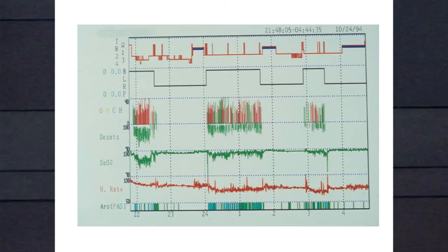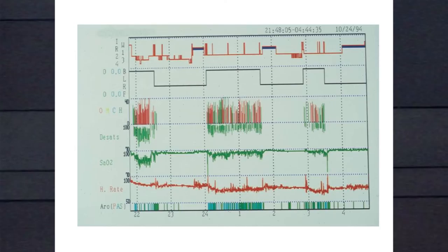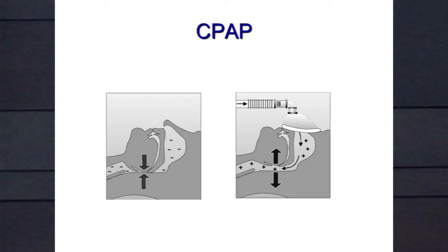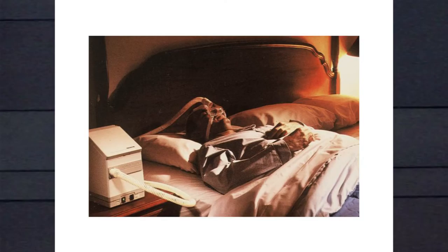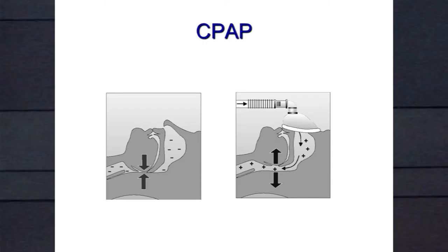How do we treat it? Weight loss. Avoid alcohol and hypnotics because they relax the back of the throat and predispose to obstruction. Good sleep hygiene. Nocturnal positioning is very important — this is why I sleep on my side. When a patient sleeps on their back, they have lots of apneas and desaturation; when they roll to their side, they all disappear. When you're on your back, gravity brings your tongue back into your throat and you obstruct. If your airway is vulnerable, you'll have problems.